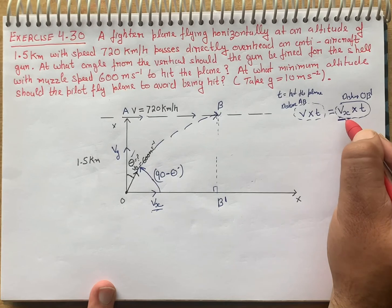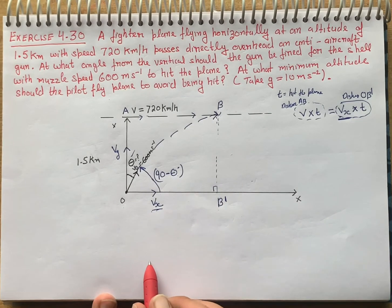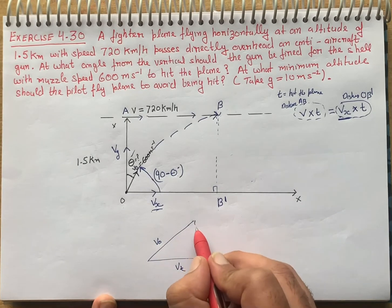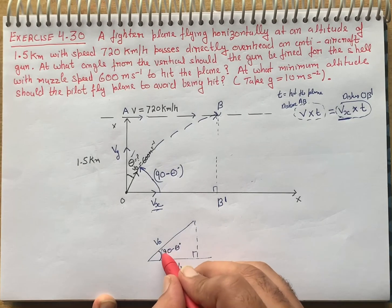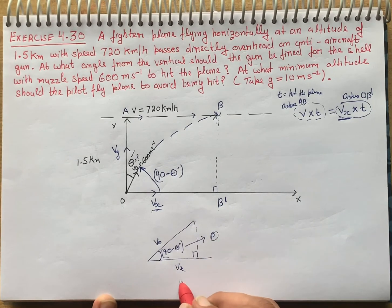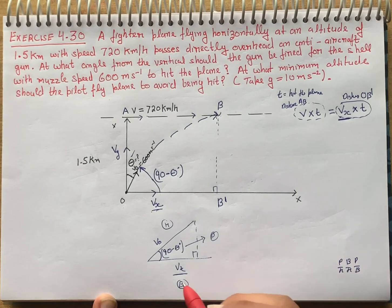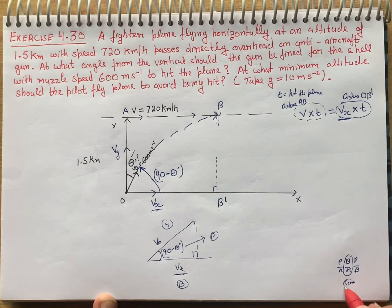Now I need to find the velocity component in x direction, according to the initial velocity of shell given. If I draw this roughly, this represents V-naught and this represents vx. A perpendicular is dropped here. So this angle is 90 minus theta. The reference angle is 90 minus theta — the opposite of reference angle is perpendicular and the hypotenuse is V-naught.